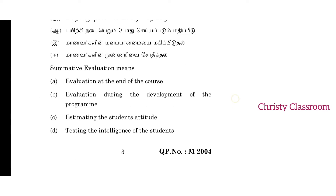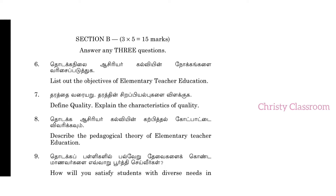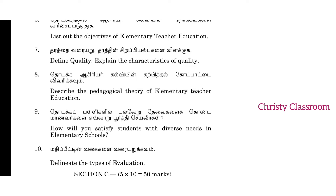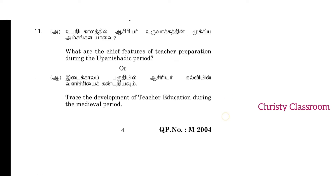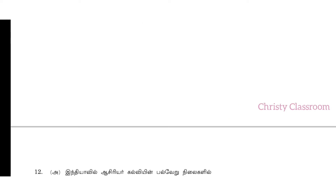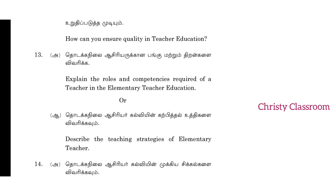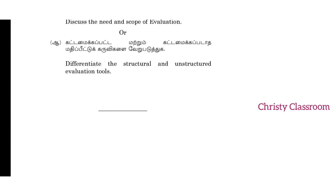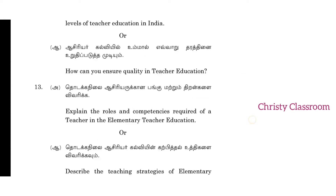Fifth one: Summative evaluation means evaluation at the end of the course. So, five marks and also ten marks. This is teacher education in the elementary level.